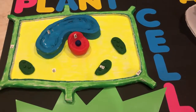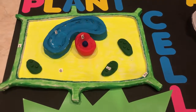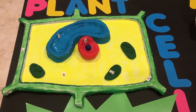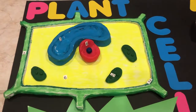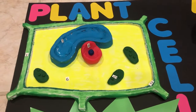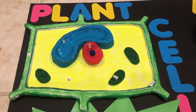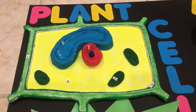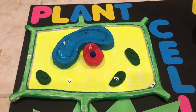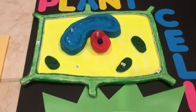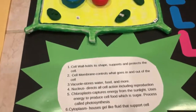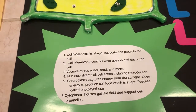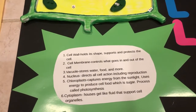The first part was the cell wall, the second was the cell membrane, the third was the vacuole, the fourth was the nucleus, the fifth was the chloroplast, and the sixth was the cytoplasm. He was also asked to label the parts and their functions.